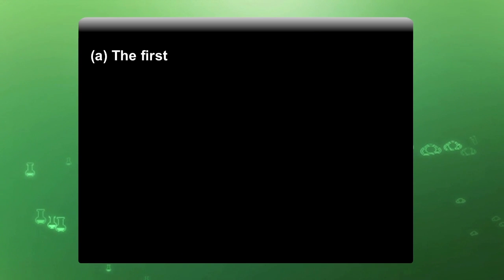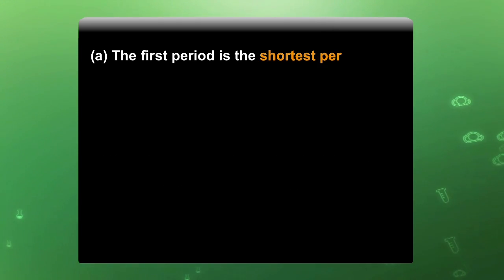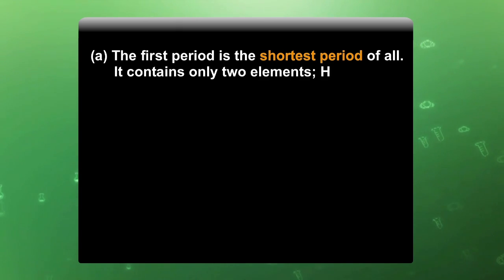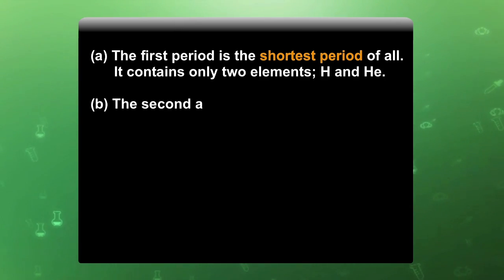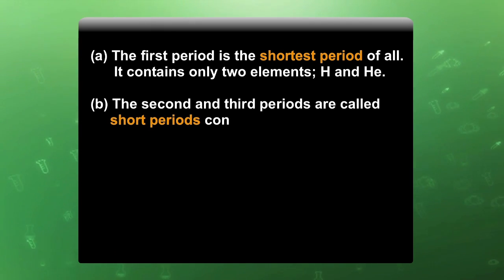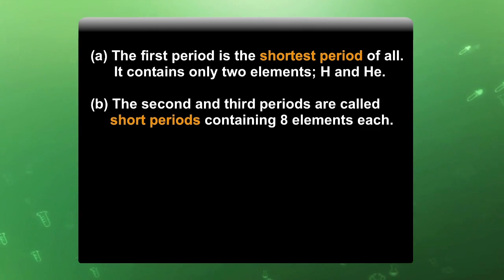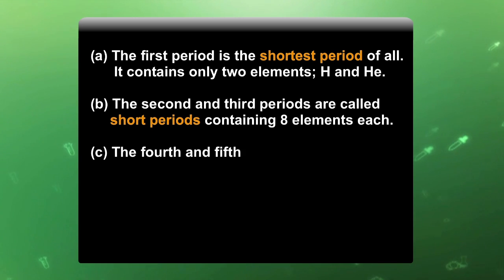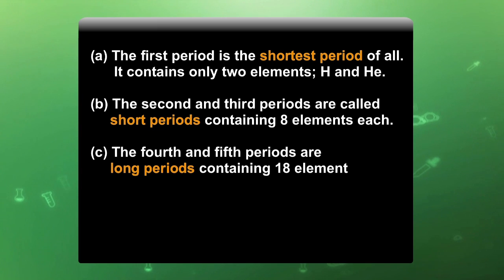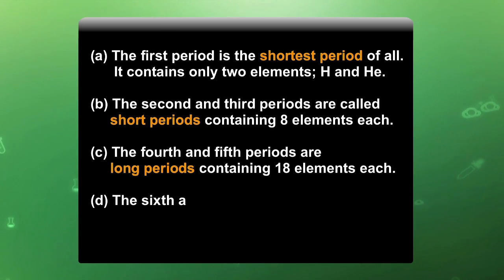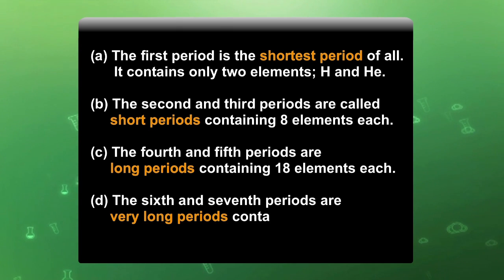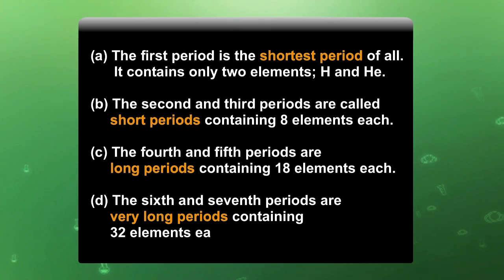The first period is the shortest period of all. It contains only two elements, that is hydrogen and helium. The second and the third periods are called short periods, containing 8 elements each. The fourth and the fifth periods are long periods containing 18 elements each. And the sixth and the seventh periods are very long periods containing 32 elements each.